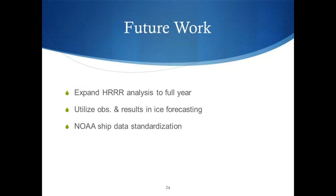Some future work: we'd like to expand HRRR to include the full year so we can more directly compare it with CFSR and interpolated meteorology. We'd also like to utilize the ship observations and bias results to try to improve our ice forecasting. Lastly, we'd like to try to get a standardization of ship data, both reporting and usage within NOAA, because it's really difficult to use since you need all the heights, and if things aren't reported in the same way, it's difficult to use that data.